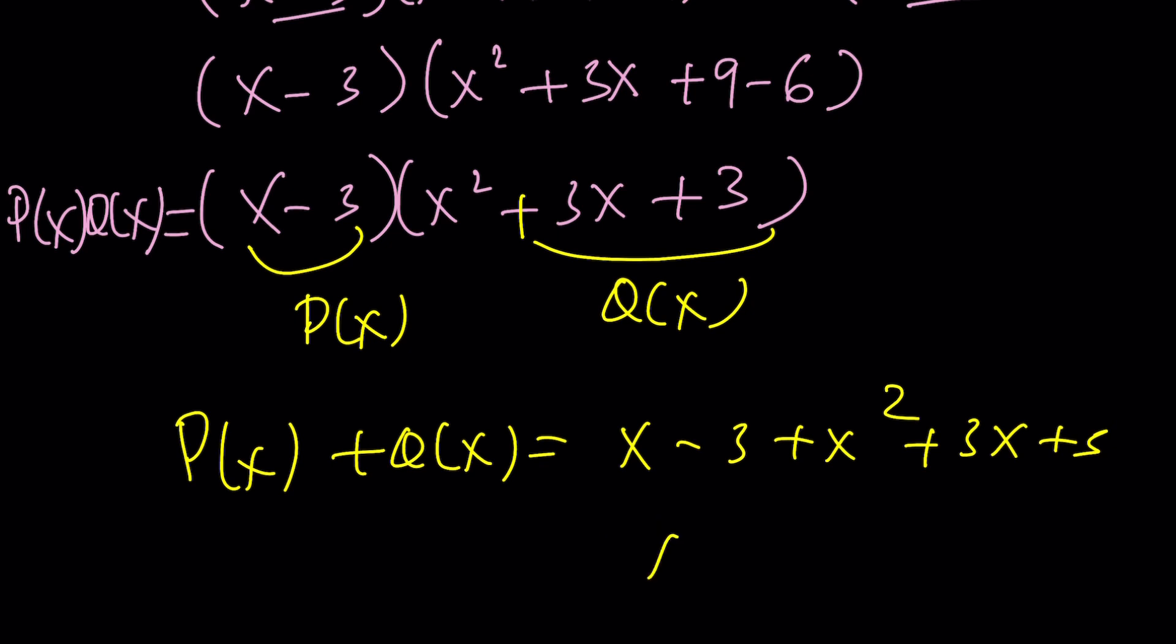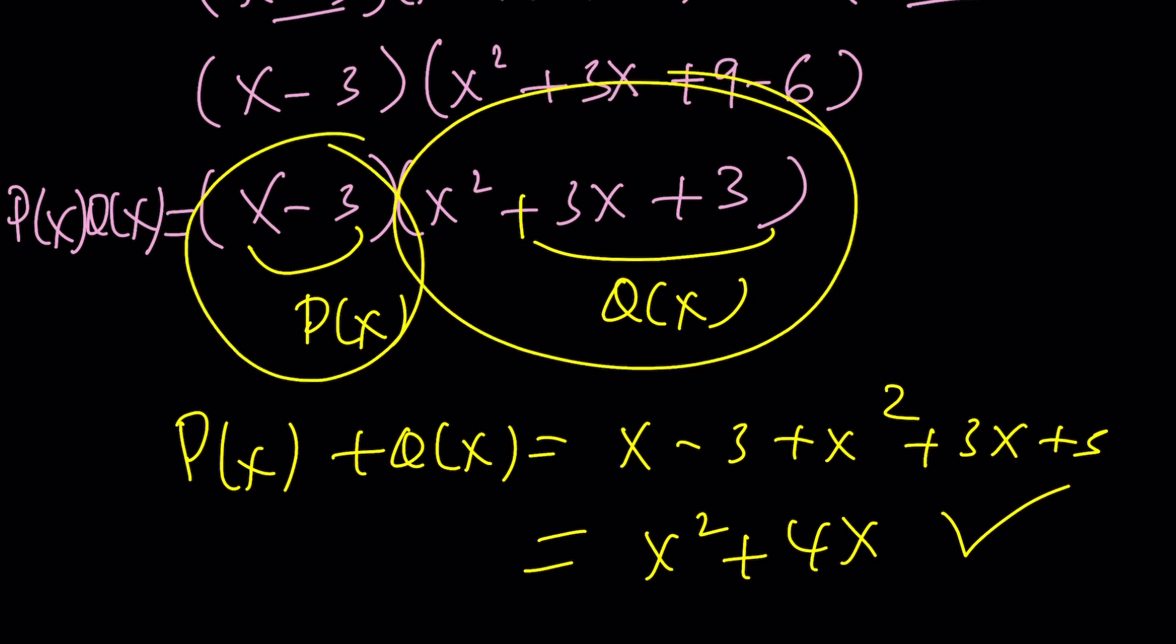Sometimes I don't. But x² + 4x would be the sum. So yes, it's verified. Therefore, P(x) and Q(x) can be given like this or vice versa. You can kind of switch them around.